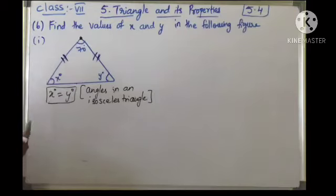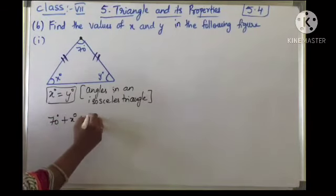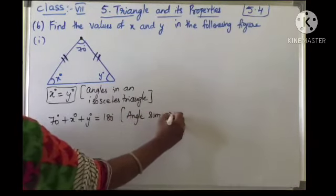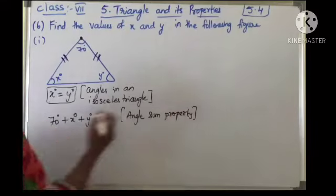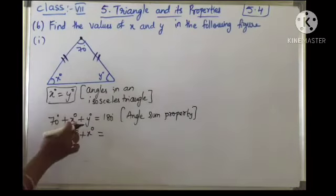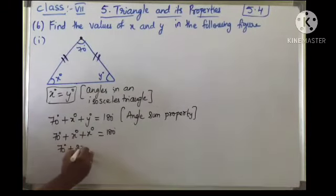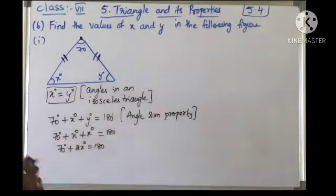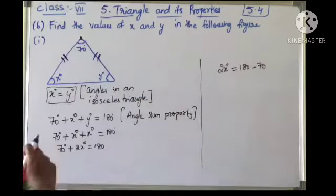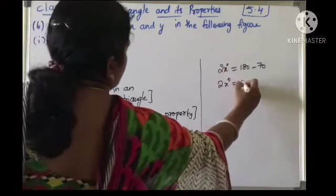Now I can take the angle sum property. That is 70 degrees plus x degrees plus y degrees is equal to 180 degrees. You know the angle sum property — sum of the 3 angles in a triangle is equal to 180 degrees. So 70 plus x plus x — that is 2x — is equal to 180. Transposing: 2x is equal to 180 minus 70, which gives 110 degrees.